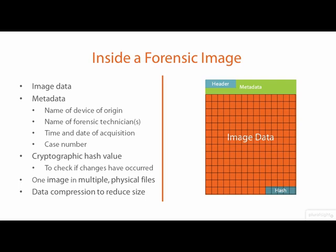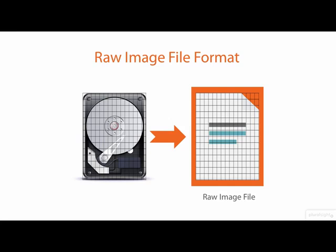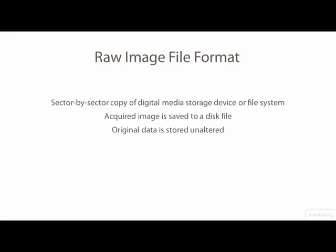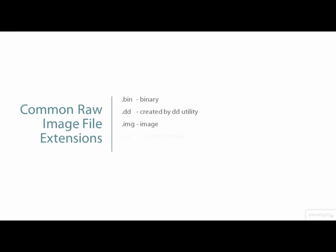There are many forensic image file formats. Let's have a look at several forensic file formats used by the forensics tools included in Kali 1.1. The most basic digital image storage format is the raw image file format. This is simply an exact sector-by-sector, bit-by-bit copy of a digital media storage device that is saved to a file. Each sector in the raw image file corresponds to identical information in a sector on the original storage media, and is acquired in the same order as the sectors on the original digital media. This means the raw image file should result in the same hash value as the source media. Raw image files contain no additional information and are unable to store metadata.